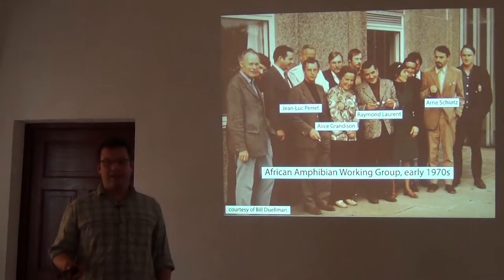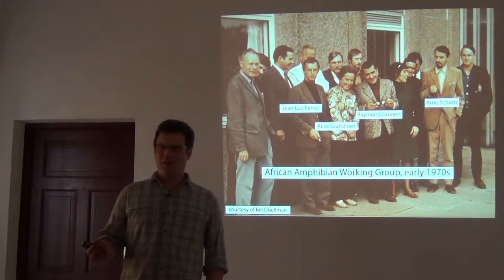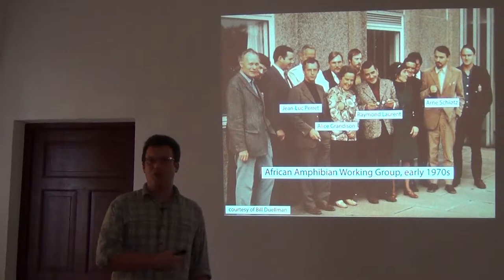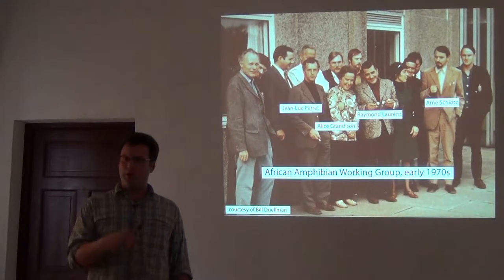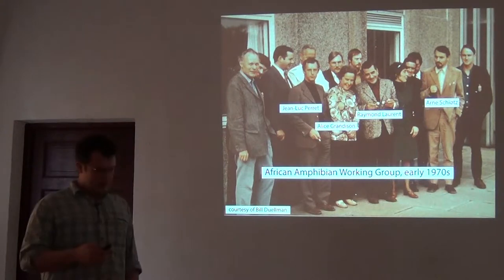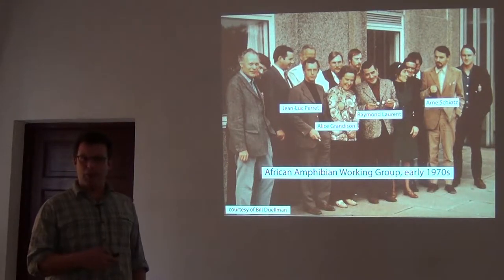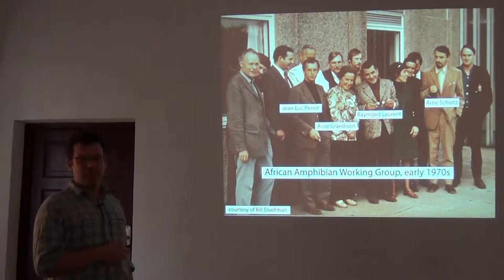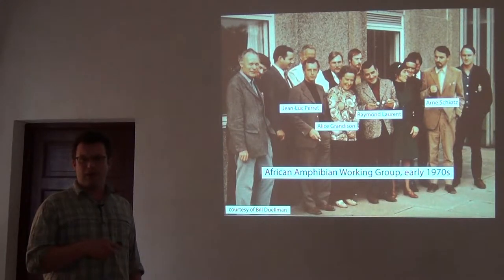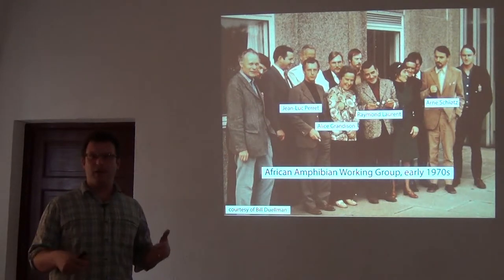This is also a really exciting time because we now have all of you participating. This is a picture from the first African amphibian working group in the early 1970s. What you'll notice is that these are all mostly men, mostly white, and mostly European — pretty much everyone at that time working on biodiversity in Africa, at least for amphibians, came from outside of Africa.